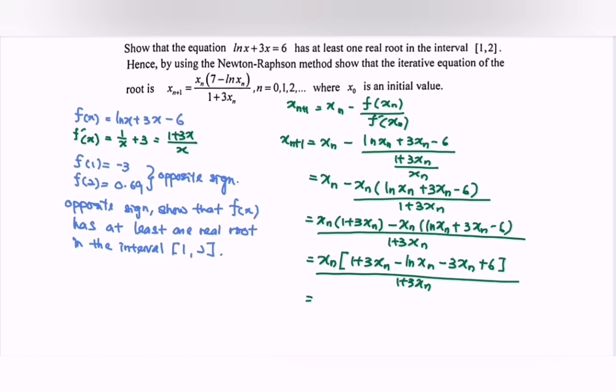So finally, after we simplify the situation, we have xₙ(7 - ln xₙ) over (1 + 3xₙ). So xₙ₊₁, and we already shown the situation given.